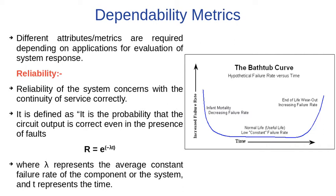There are three phases of this curve. In the first phase, which is called the manufacturing phase, the failure rate is high. With the help of design, development, and research, engineers lower down this failure rate. Then another phase starts, which is called the useful life or normal life, where the failure rate is almost constant.